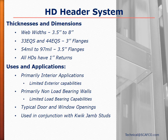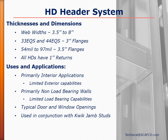The assembly of the HD header system is very straightforward compared to traditional boxed or built-up assemblies. First, the quick jams are installed on both sides of the opening with the web of the members facing the inside of the opening. Once installed and secured, the flush mount clips are screwed through the pre-punched holes to the web of the quick jams. The final step is to simply slide the HD header into the installed flush mount clips and secure it with screws through the pre-punched holes in the clip.